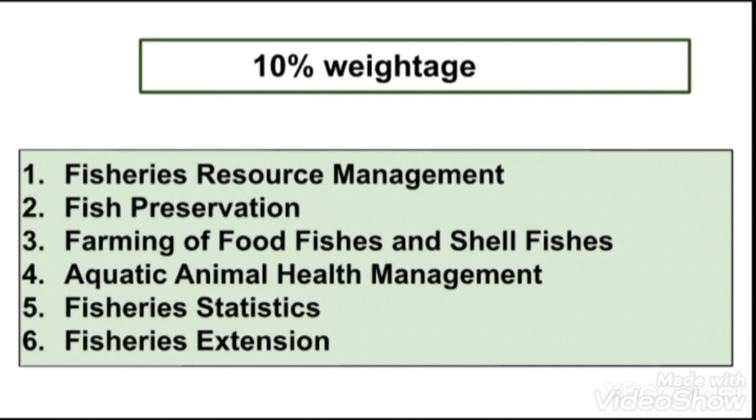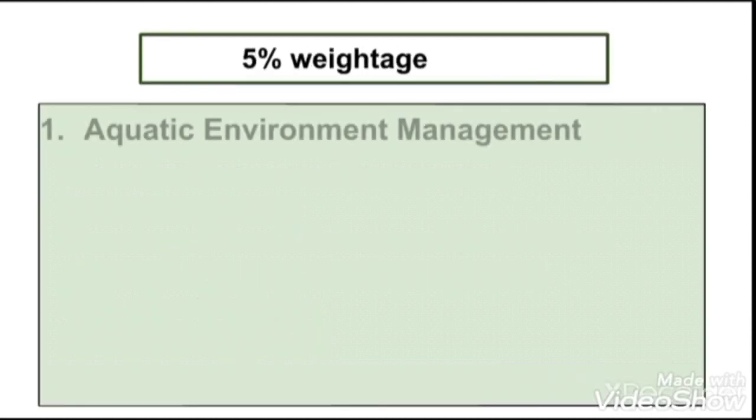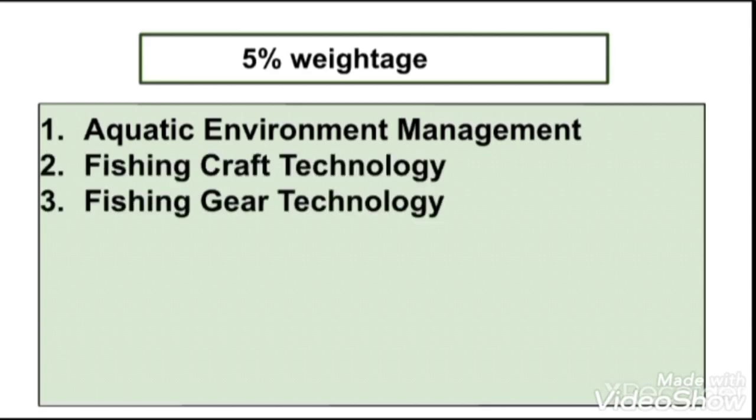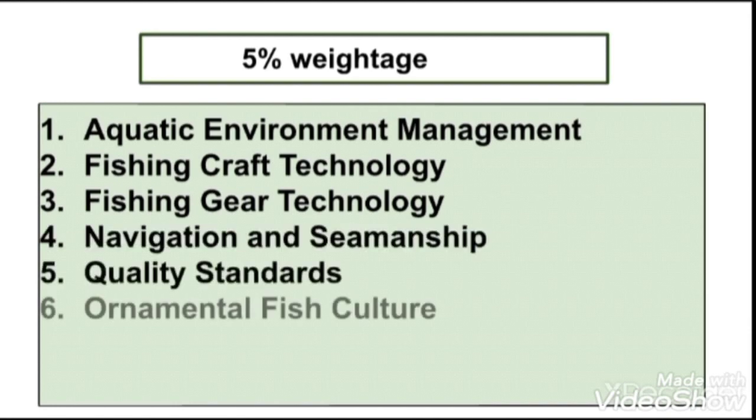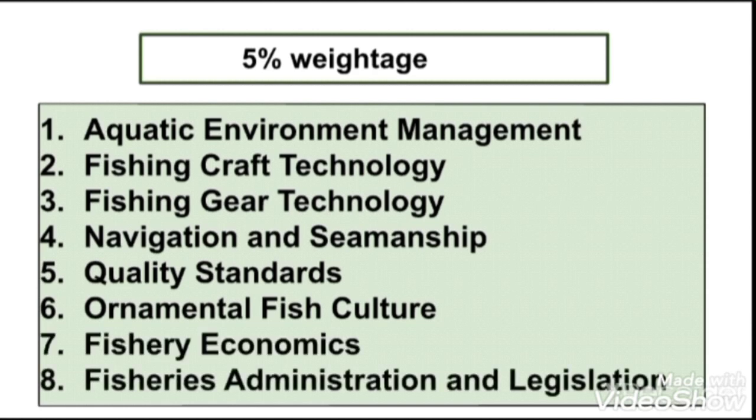Based on the 5 percentage weightage, we have most importantly Aquatic Environment Management, and then comes the Fishing Craft Technology and Fishing Gear Technology. Next to that is the Navigation and Seamanship, Quality Standards, Ornamental Fish Culture, and then Fisheries Economics and Fisheries Administration and Legislation, in which each topic carries 5 percentage weightage.